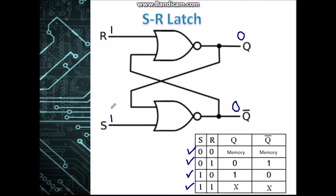The problem with this circuit is that S or R, or even both, can be changed randomly due to all the processes going on in the circuit. The value of S or R can change, and this causes the output to change as well. This brings us to the topic of control signals, which are needed in order to regulate the output of the circuit.